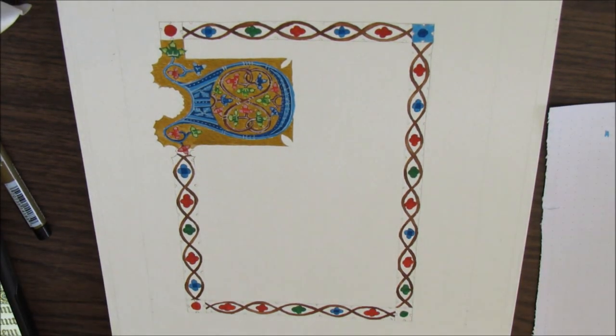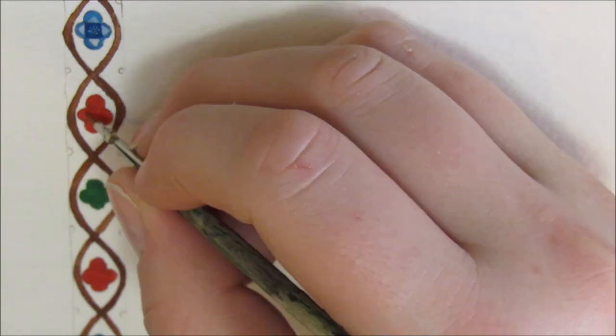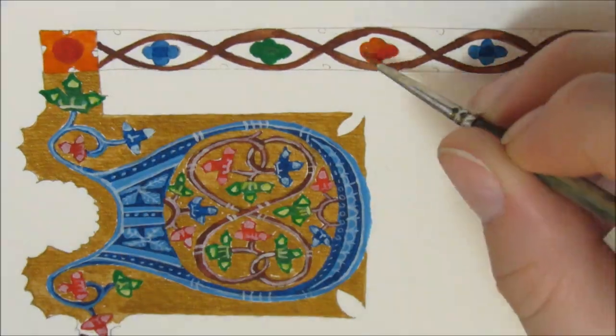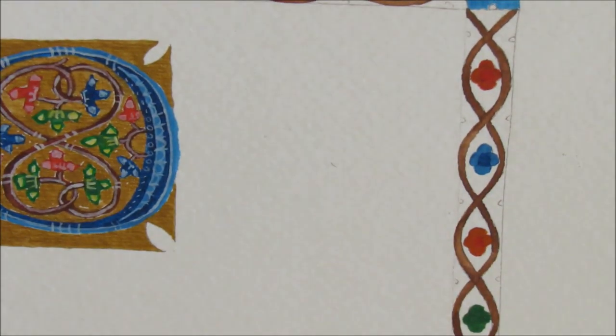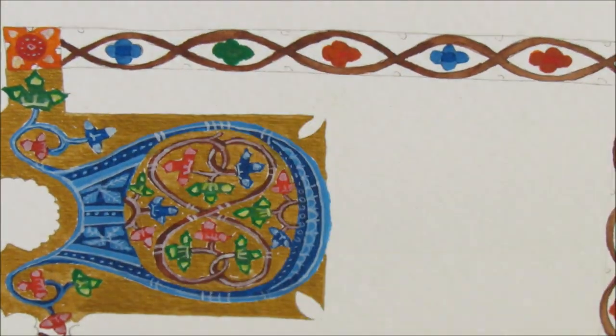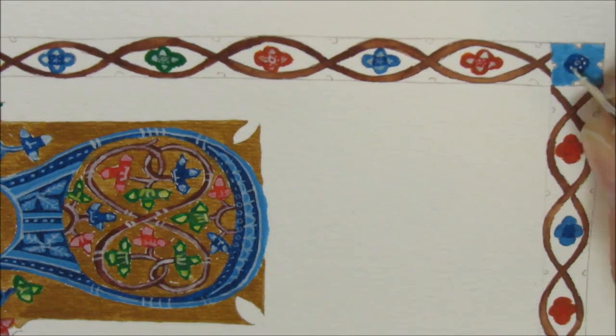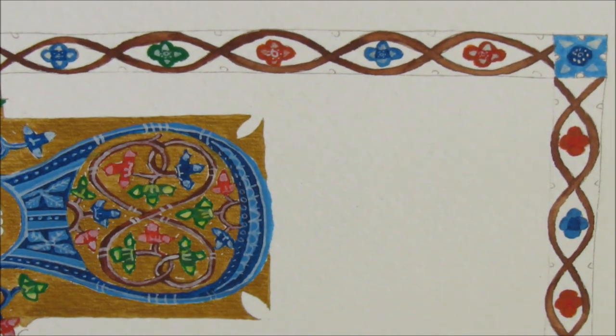One of the things you might notice is that I have a scrap piece of paper under my hand and over top of the art. I do this because if I didn't, the oils in my hand would seep into the page, and when I try to paint on top of them or do calligraphy over top of them, the ink wouldn't seep into the paper properly and it would make a very spotty and chipped effect, which isn't what I'm going for.